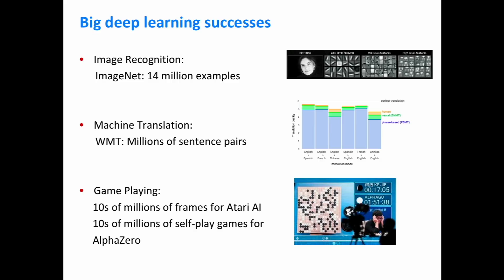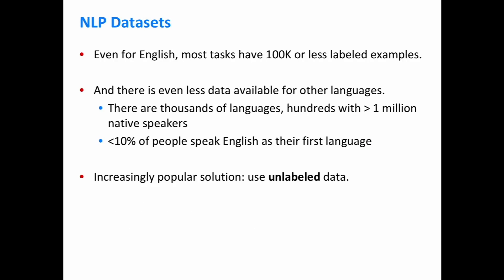Underlying these successes is really large amounts of data. For image recognition, there's the ImageNet dataset with 14 million images. Machine translation datasets often have millions of examples. For game playing, you can actually generate as much training data as you want essentially by running your agent within the game over and over again. But if we look at NLP, the story is quite different — even popular tasks like reading comprehension in English have datasets like SQuAD on the order of only 100,000 examples.